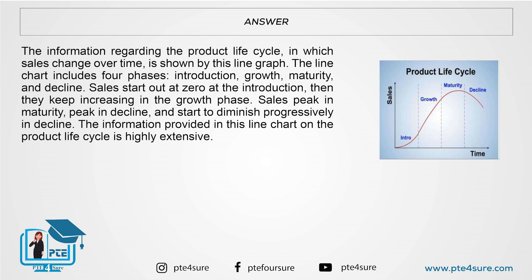The information regarding the product life cycle, in which sales change over time, is shown by this line graph. The line chart includes four phases: introduction, growth, maturity, and decline. Sales start out at zero at the introduction, then they keep increasing in the growth phase. Sales peak in maturity and start to diminish progressively in decline. The information provided in this line chart on the product life cycle is highly extensive.